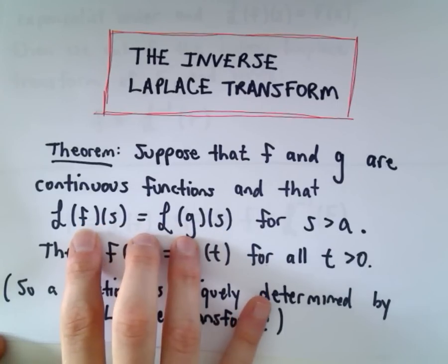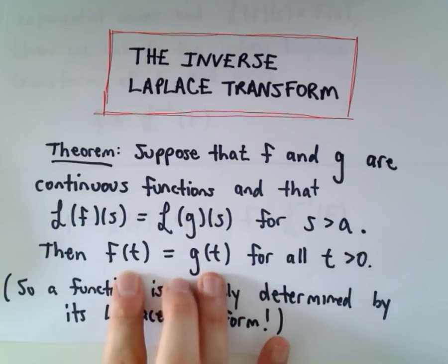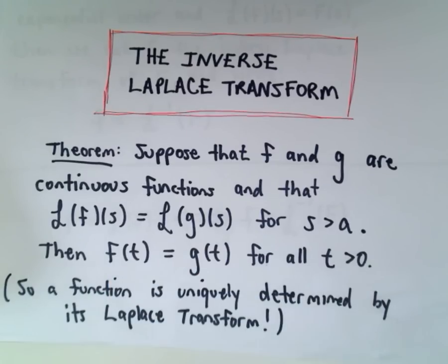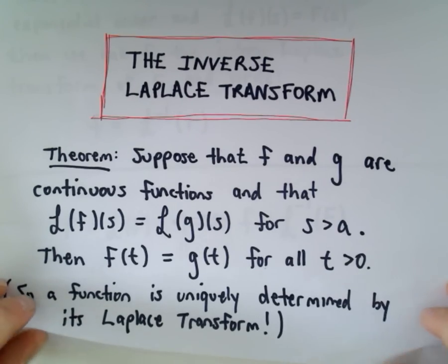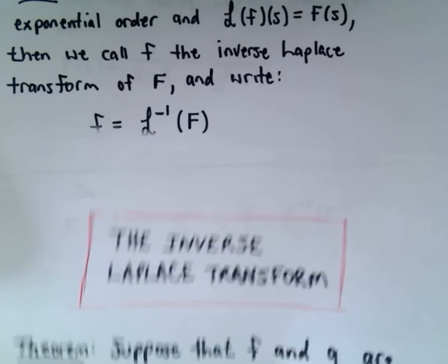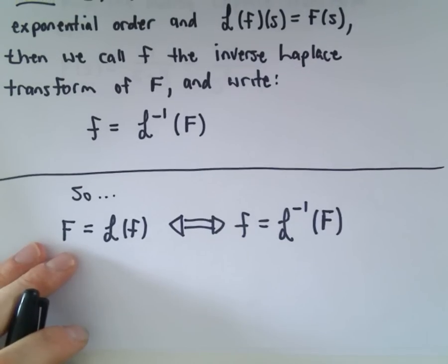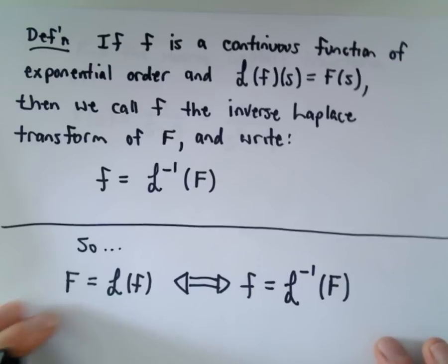Basically it says if the Laplace transform is the same, it had to be just the same single function. So what it says is a function is uniquely determined by its Laplace transform. That's an important idea. Two different functions can't have the same Laplace transform.